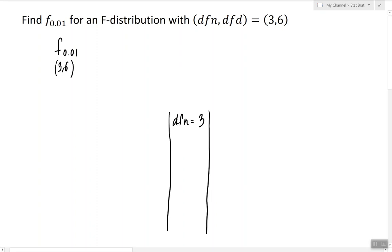And I'm going to look for the row corresponding to number 6. And in the intersection of that row and that column, I'm going to look for the value that corresponds to alpha 0.01.